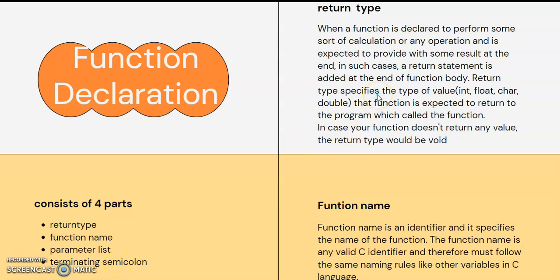The return type is what the function returns. When a function is declared to perform some sort of calculation or any operation and is expected to provide some result at the end, we call a particular function to perform that task. The return statement sends the result back to the main function.